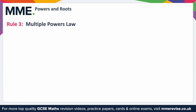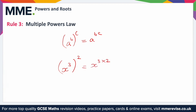The multiple powers law is when you raise one power by another. For example, if we had a to the power of b and we raise that to the power of c, you multiply the powers, giving a to the power of b times c, which we write as bc. For example, x to the power of three squared would become x to the power of three times two.